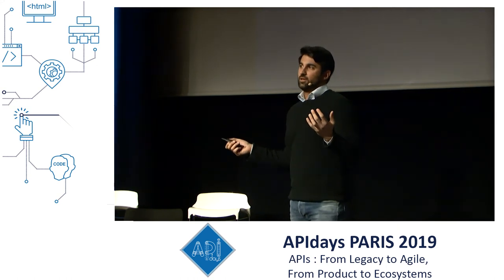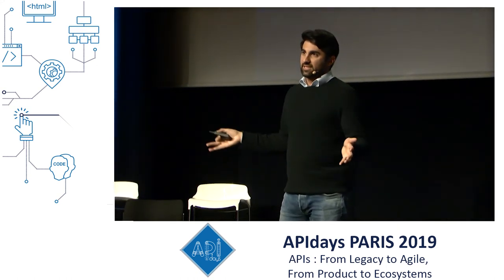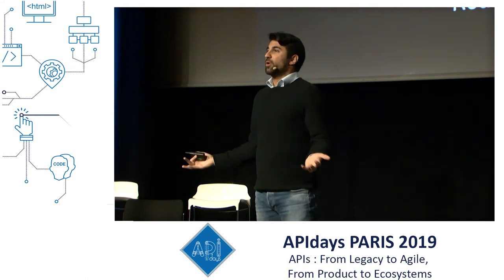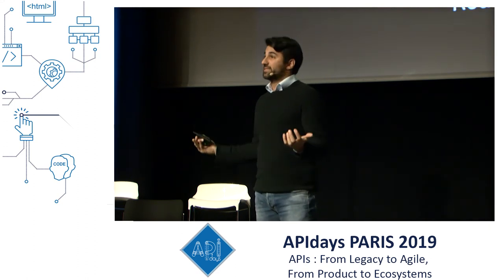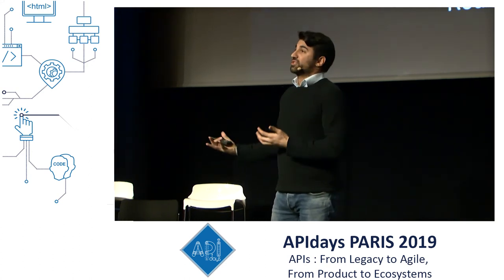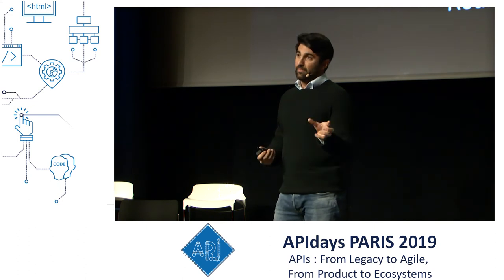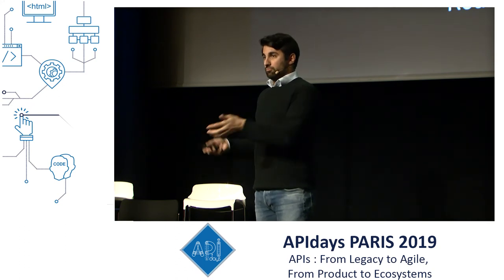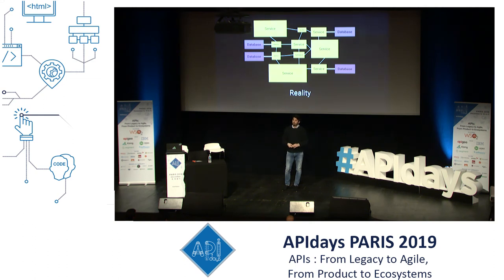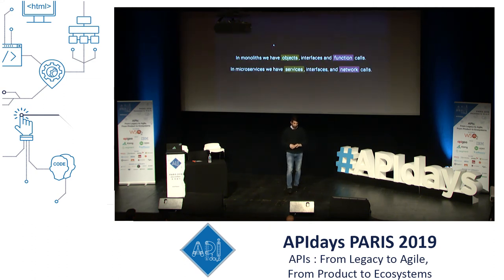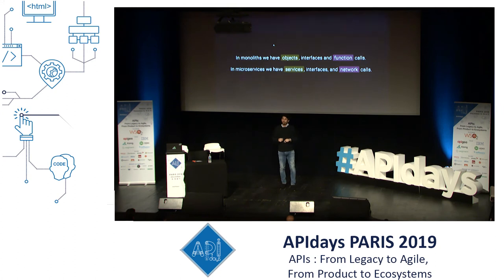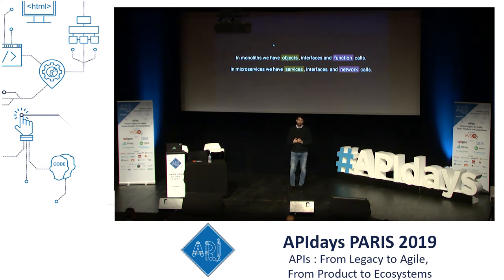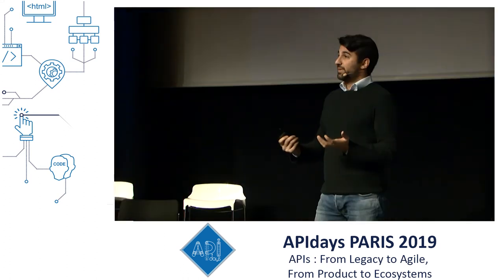Every time we look at microservices we're looking at an ideal world where every service is the same — they're all connected to each other. More pragmatically, we're going to be having services of different sizes depending on the actual boundaries we want to extract. We don't have to start by making those services very small; we can always make them smaller later on. We start by making them as big as the business requires. In monoliths we have objects that are communicating with each other via function calls over a CPU, but in microservices we're replacing those objects with services that communicate over the network. That is the biggest difference — the network.